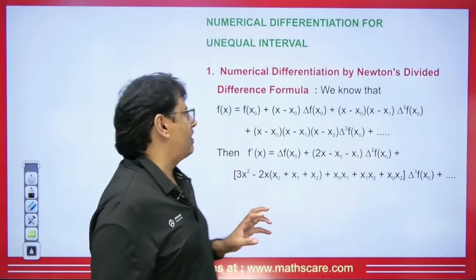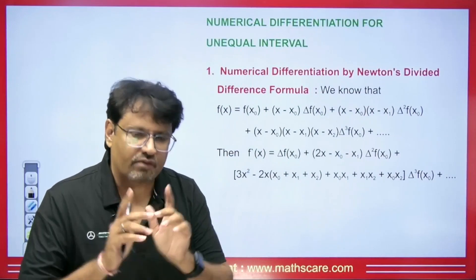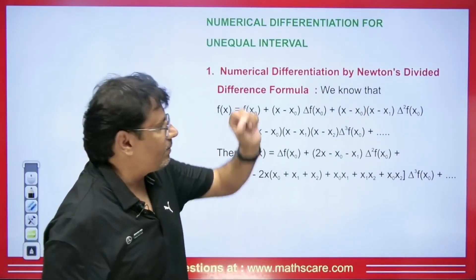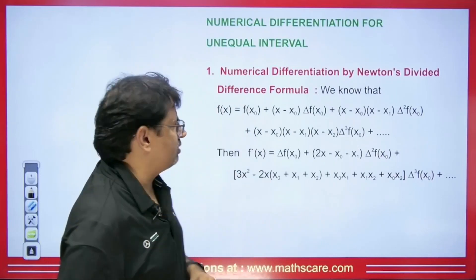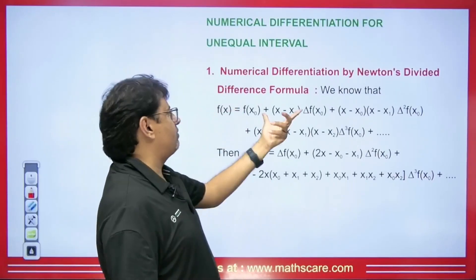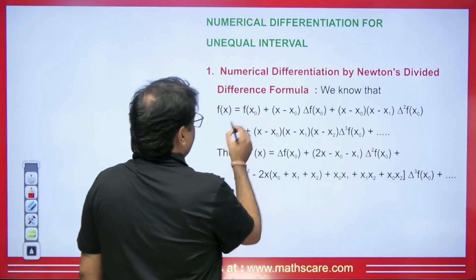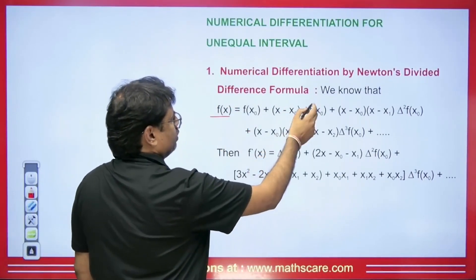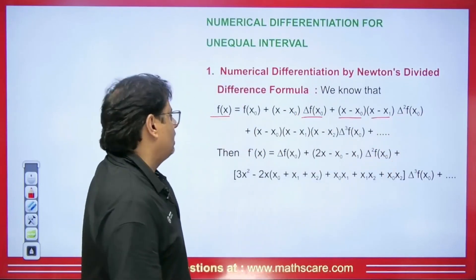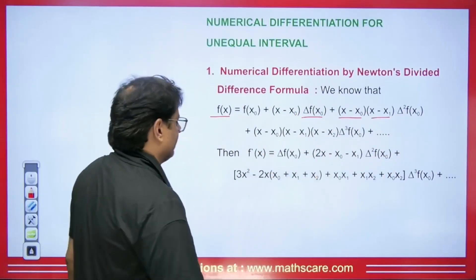Let's understand the formula for Newton divided difference. If you haven't watched the full video of Newton divided difference where I told you how to calculate the value, please go to the i-tab and you will find the link in the description. The formula is: f(x) = f(x0) + (x - x0)·Δf(x0) + (x - x0)(x - x1)·Δ²f(x0). And we have more terms. What we will do is differentiate this formula with respect to x.